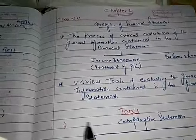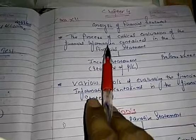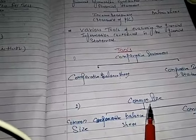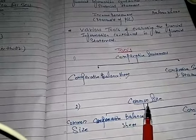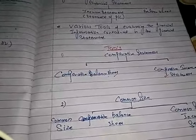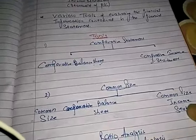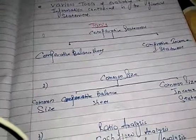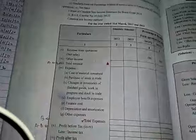Good morning students. Continuing the analysis of financial statements, the next topic is common size. Under common size, there is a common size balance sheet and common size income statement. I'm going to explain the format of common size income statement.